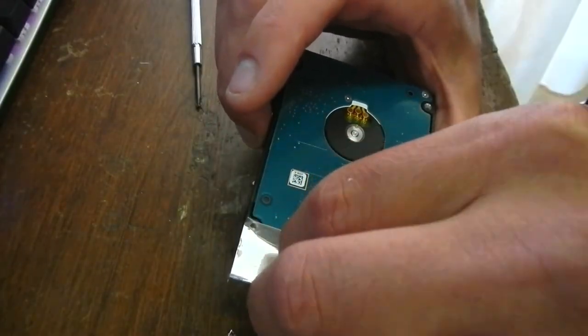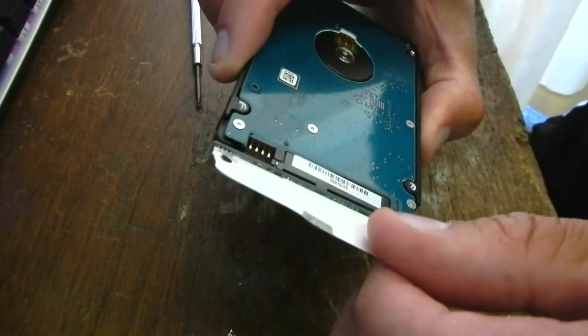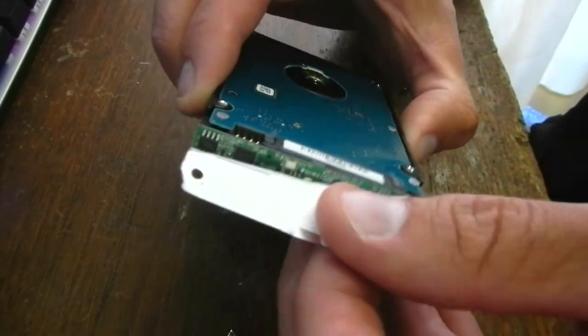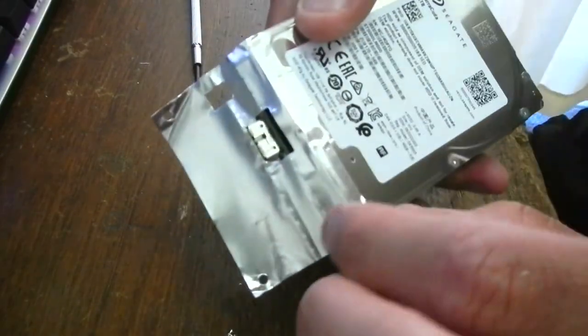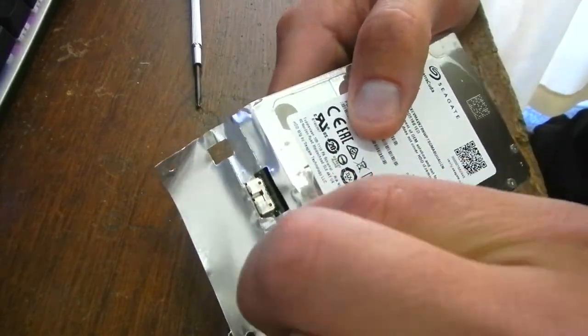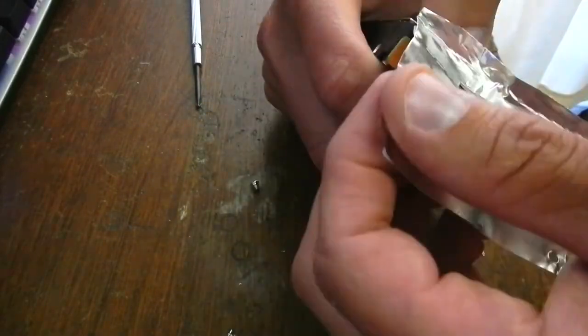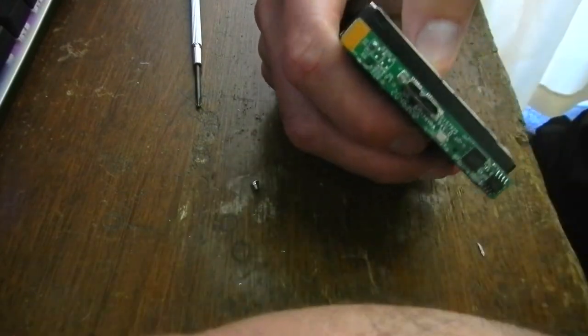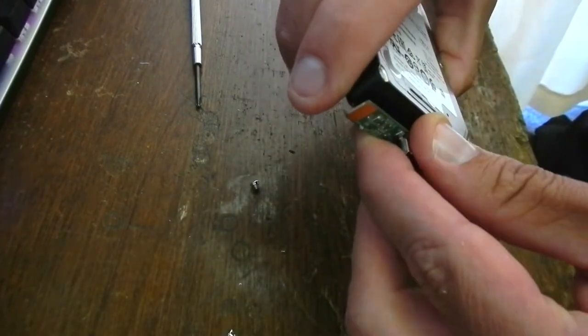Then carefully peel off this aluminum foil, first one side and then move over to the other side. What you will find is that this is a standard SATA drive with just a small USB to SATA bridge, that green little PCB there.